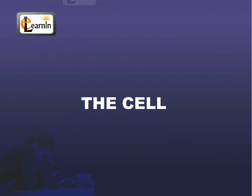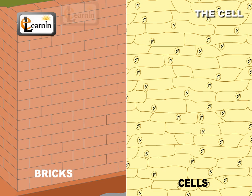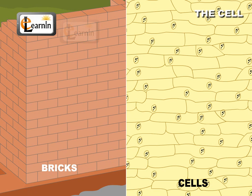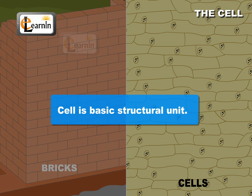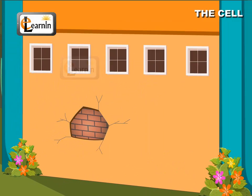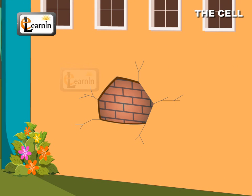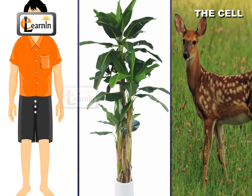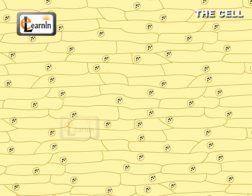The Cell. Cells are to a living organism just as bricks are to a building. They are the basic structural units. Though a building is built of similar bricks, they are of different shapes and sizes. In a similar fashion, all organisms are made up of cells, though they differ from one another.